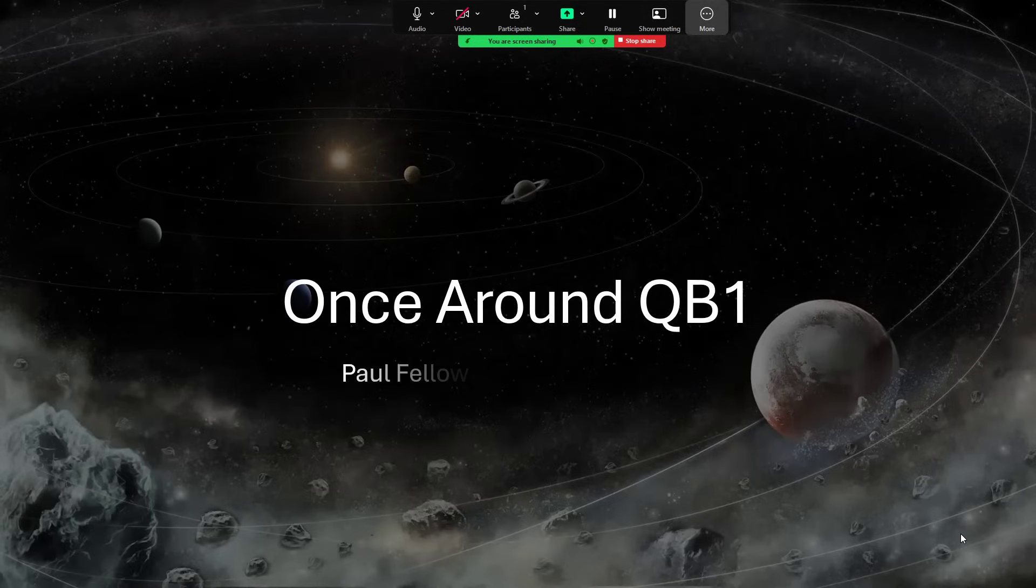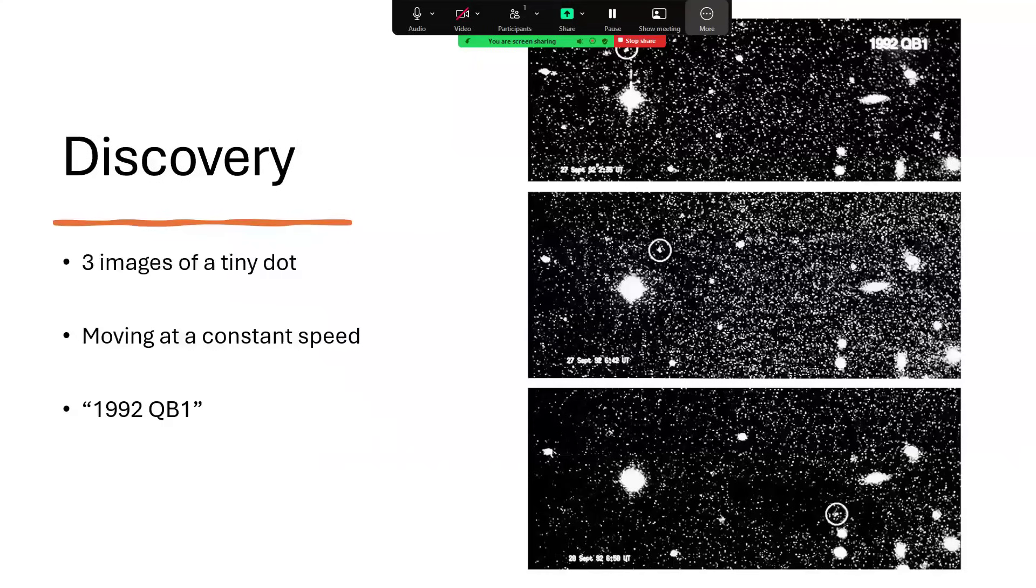Back in 1992, a series of photographic images were taken. We have three of them on the right hand side here from the 27th and 28th of September. What you can see amongst all the other changes between the images is that there is a moving dot circled there with a little ring around it to make it easy to pick out, which has changed position.